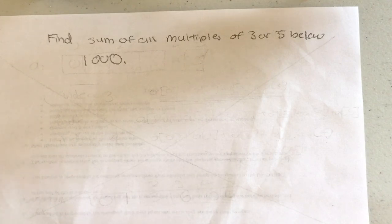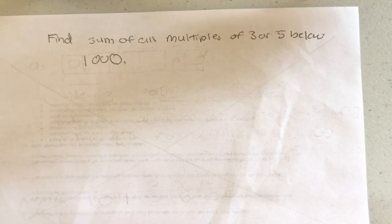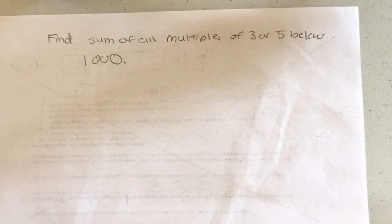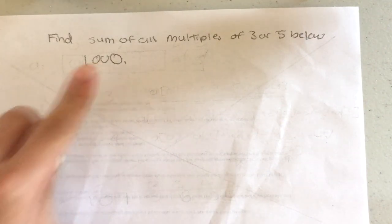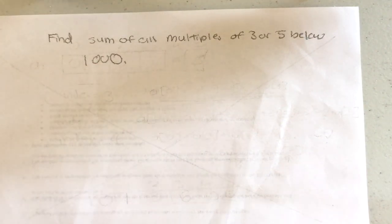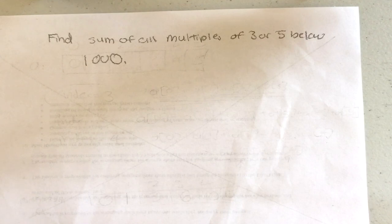You could create a for loop, start from i equals one, go up to a thousand, and every time you have a number that's divisible by three or five, you sum it up — do sum plus equals whatever that number is. But the problem is you technically don't have to do that.